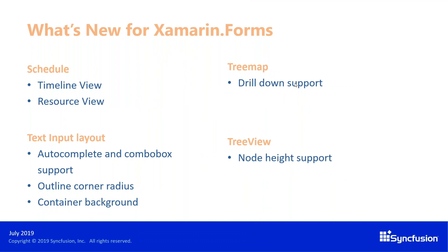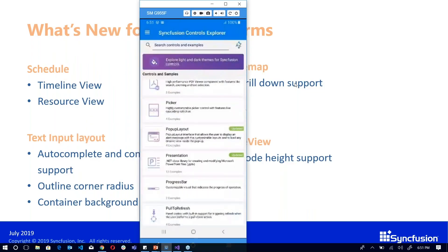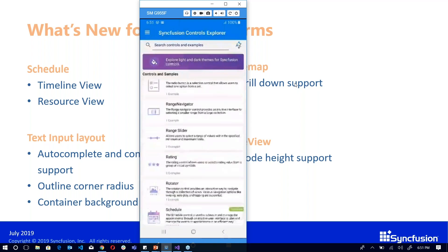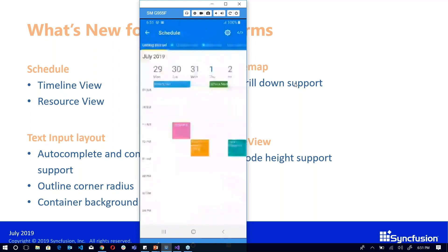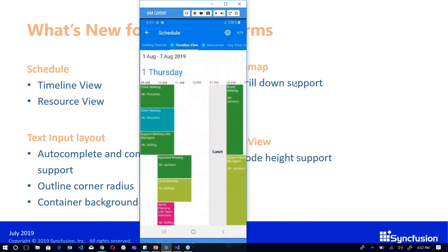The next set of features are from the schedule, text input layout, tree map, and tree view. In the schedule, we've provided the much-awaited timeline and resource view — we had many requests for this feature and have now provided support. The tree map has drill-down support with full animation. The text input layout now supports combo box and autocomplete, with customizable outline corner radius and container background. In tree view, you can now adjust the node height.